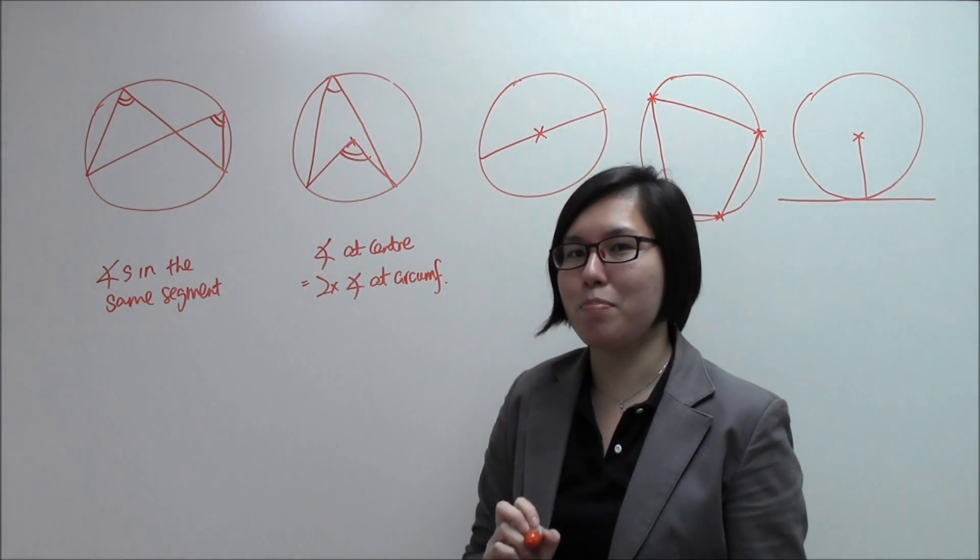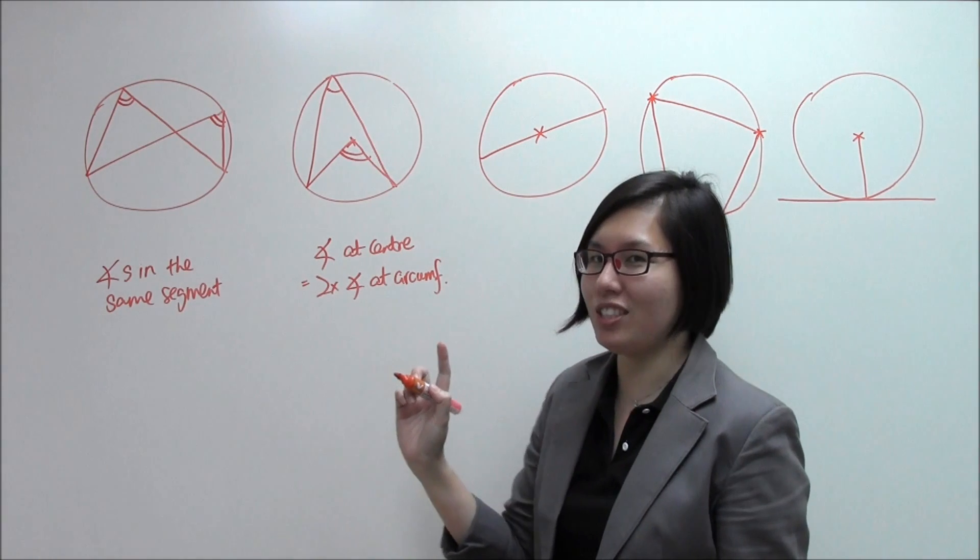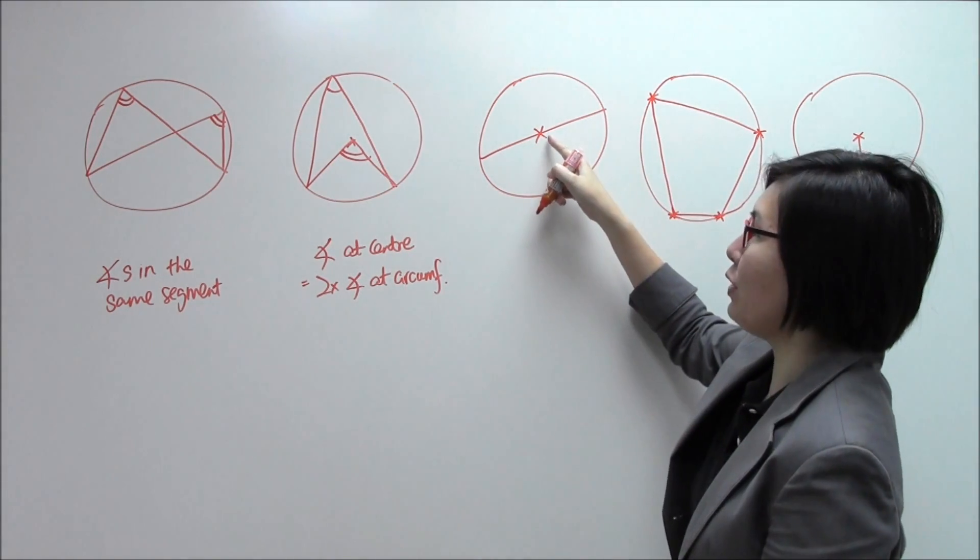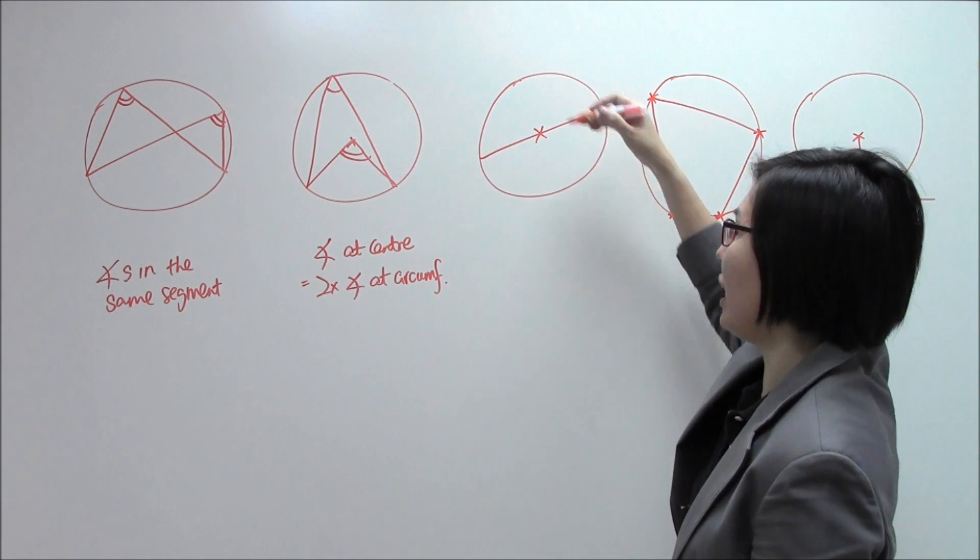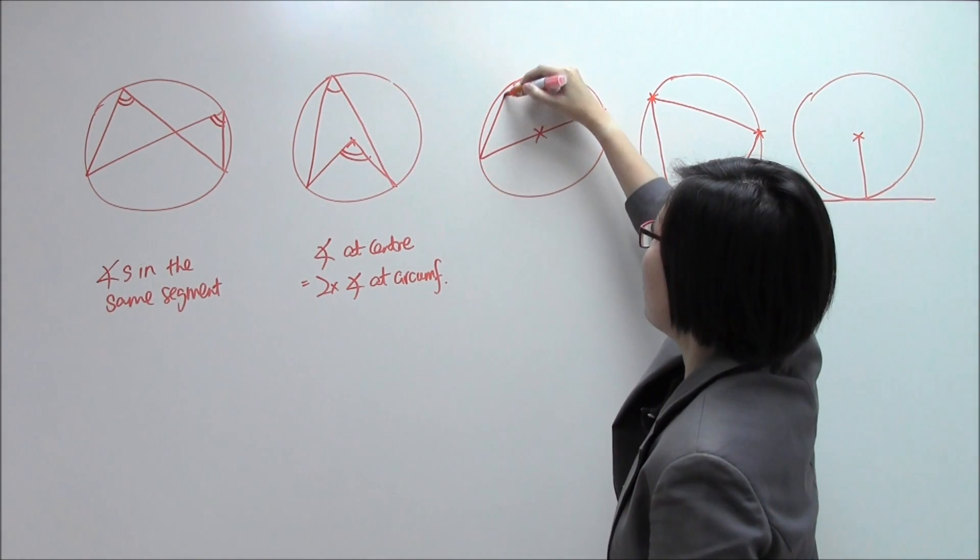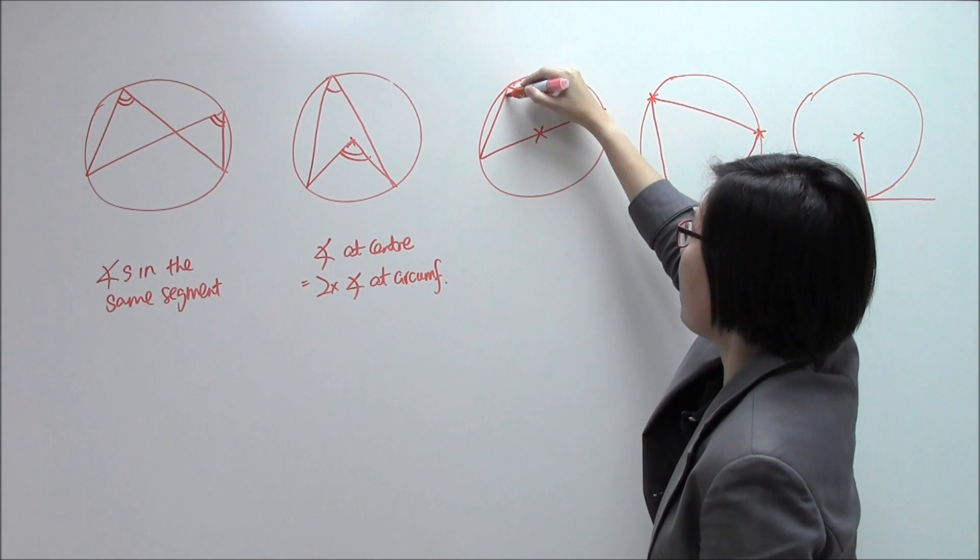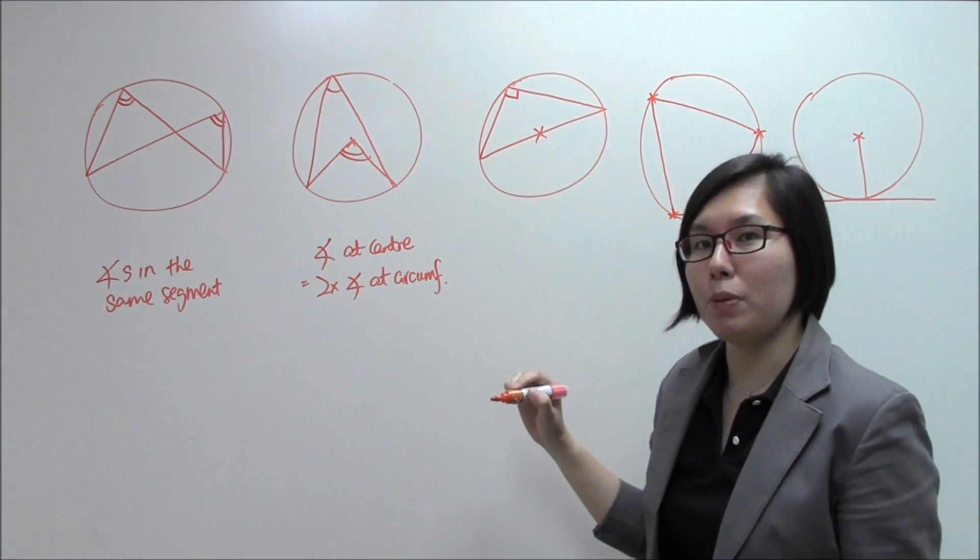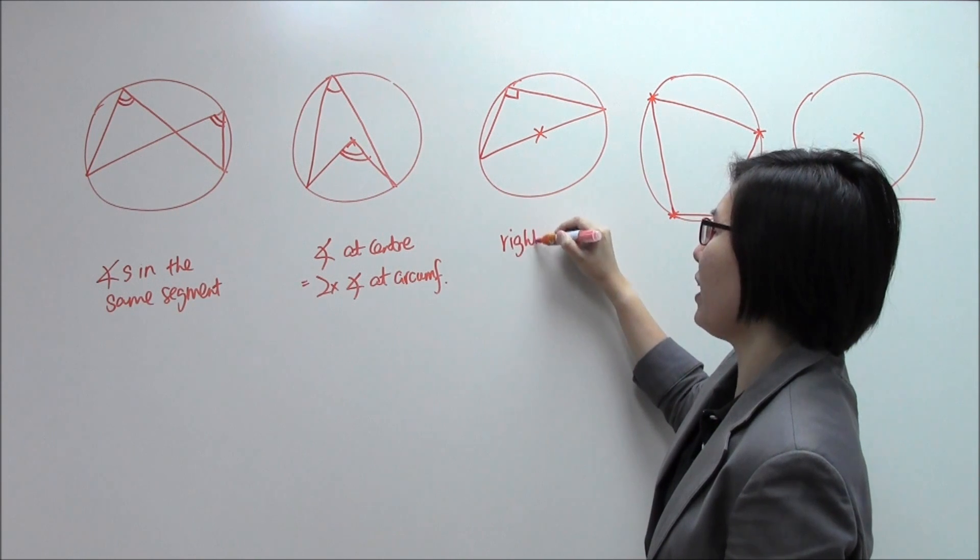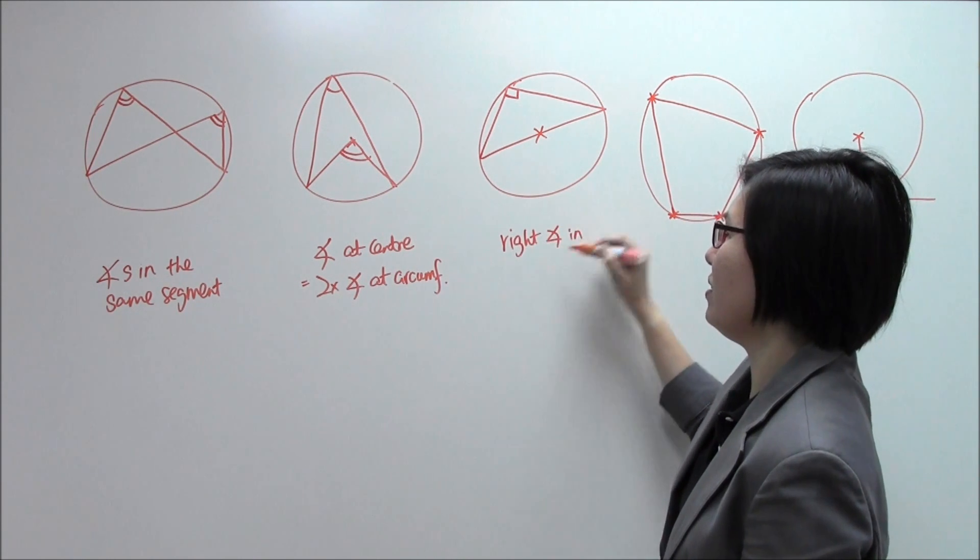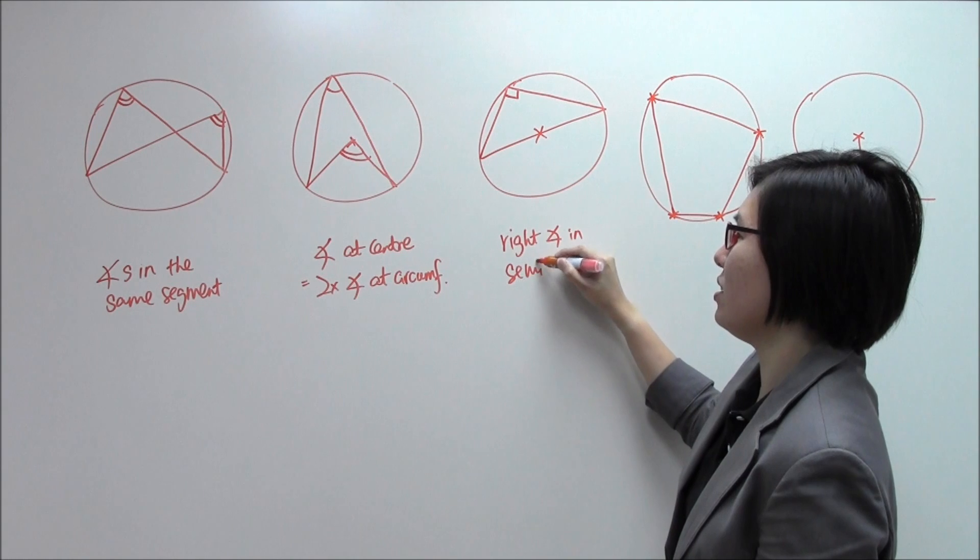This is the second property. Let's move on to the third circle. Over here, this line over here that cuts through the centre of the circle is called the diameter. And this third property says right angle in semi-circle.